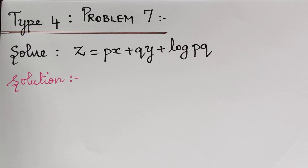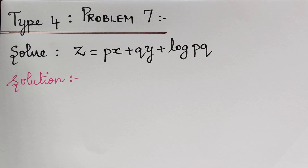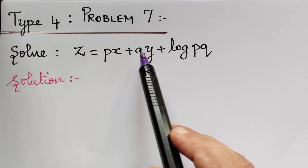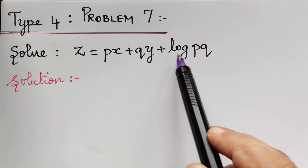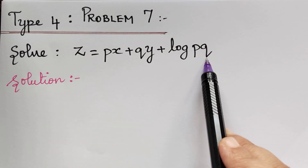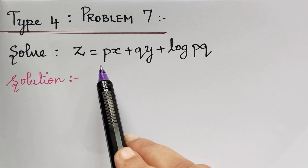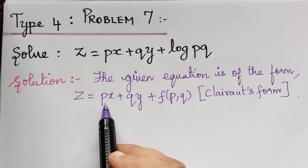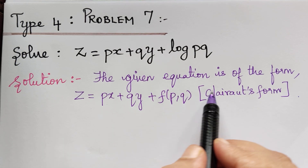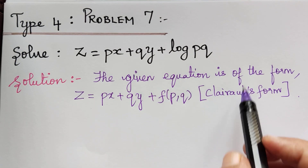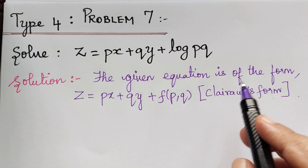Dear students, under the topic non-linear partial differential equations, we are solving a problem under Type 4. Here we have Problem 7. The question is z = px + qy + log p. When we observe the question, we understand that it is of the form z = px + qy + f(p, q). So it is of Clairaut's form.